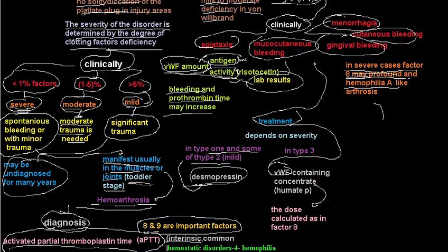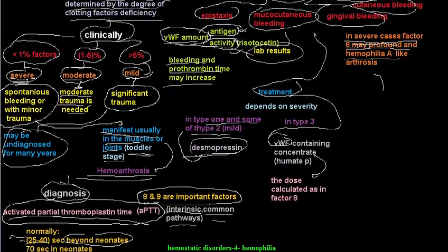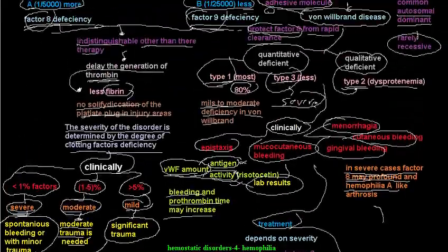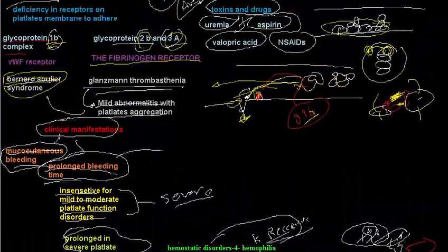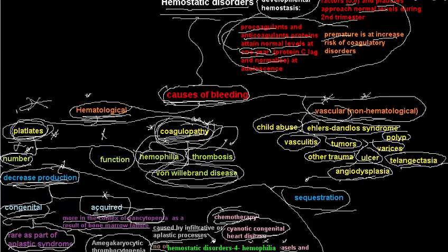How do we calculate the dose? Just like when we calculate the dose for Factor 8 deficiency — the desired level of von Willebrand factor is multiplied by the patient's weight in kilograms by 0.5. Thank you very much for watching. In the next and final video of hematological or bleeding disorders, I'm going to talk about thrombosis and DIC, and by that I will conclude this series.